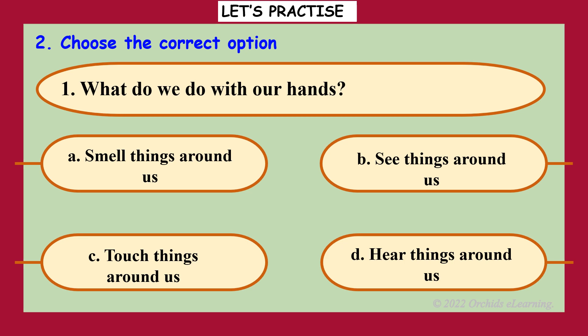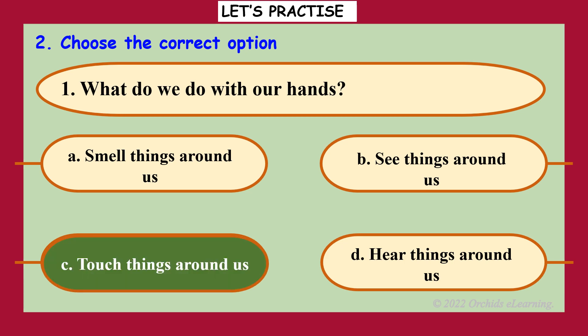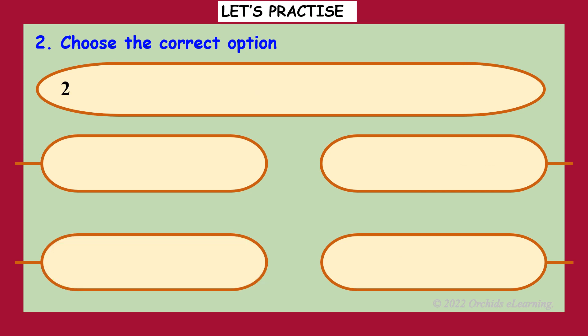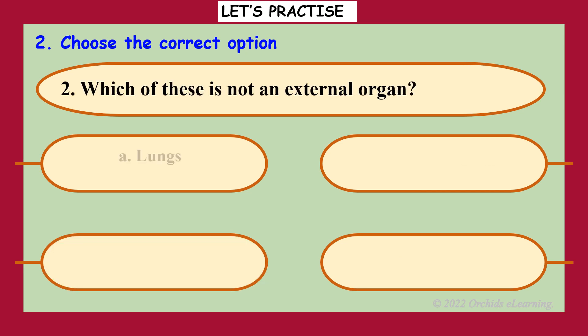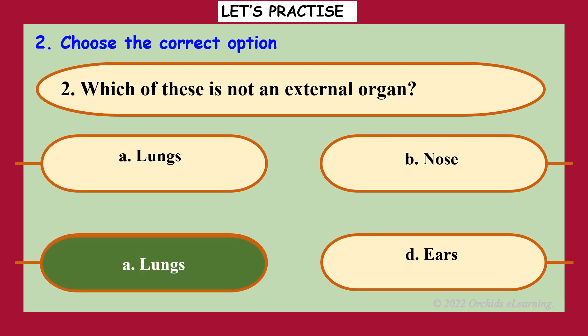Choose the correct option. What do we do with our hands? Read the options. Answer: see and touch things around us. Which of these is not an external organ? Read the options. Answer: A — lungs.